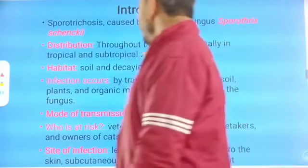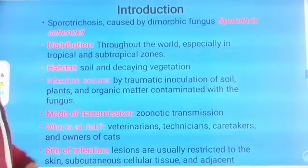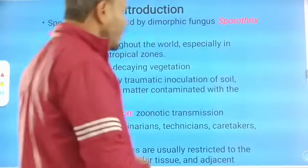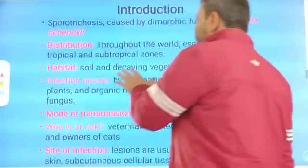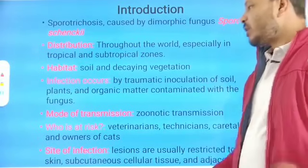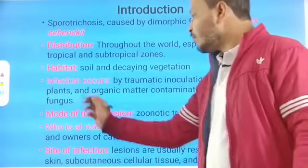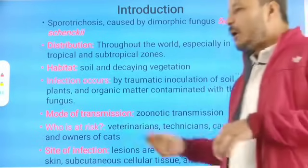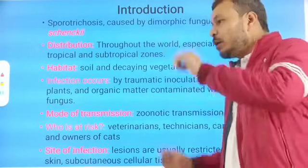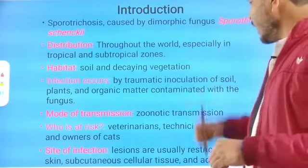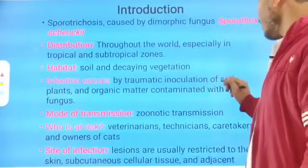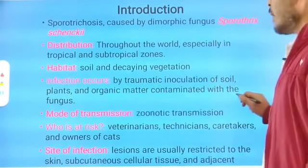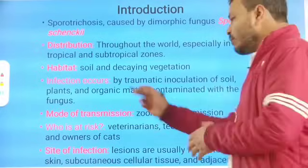It is present throughout the world, especially in tropical and subtropical zones. Their habitat is soil and decaying vegetation, that means plant materials which are decaying. Infection occurs by traumatic inoculation — through nails or thorns — from soil, plants, and organic matter contaminated with the fungi.